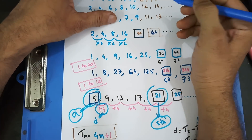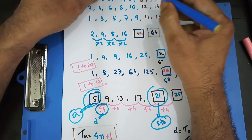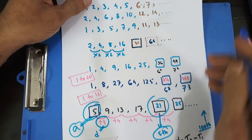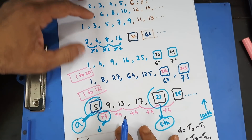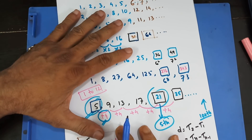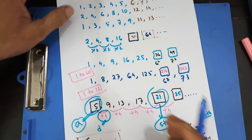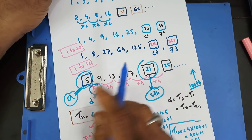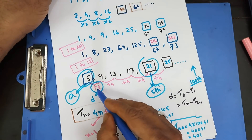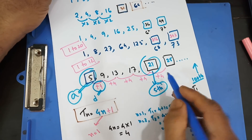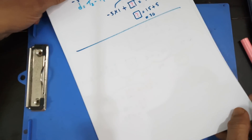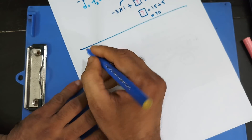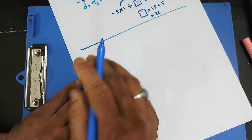Good morning, students. Welcome to my second video on sequences. This is sequence 2. In my last video, I showed you the very basics of sequences and how to find the nth term and the next two terms of a sequence where the first difference is common. Now we're going to find out the quadratic sequence — that means the second difference is common, not the first difference.